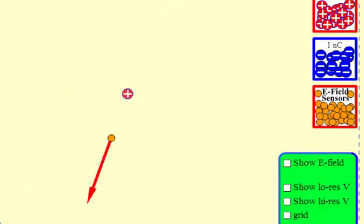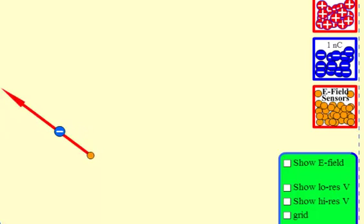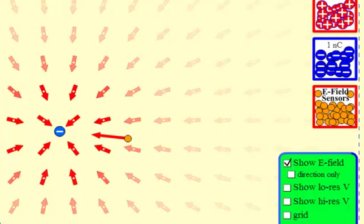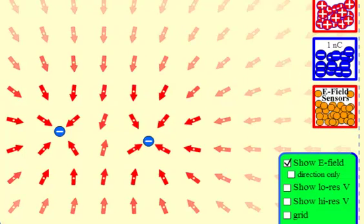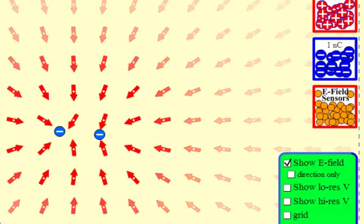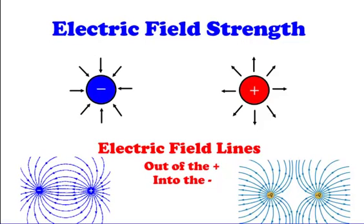But if I replace this with a negative charge, where's my electric field strength going to be going? Into the negative. It doesn't matter where it's going — it's out of the positive and into the negative. If I put a positive right here, you can see the lines are going out of the positive and into the negative. But if I have two of the same charges, they will repel each other. And that brings us back to our simulation.